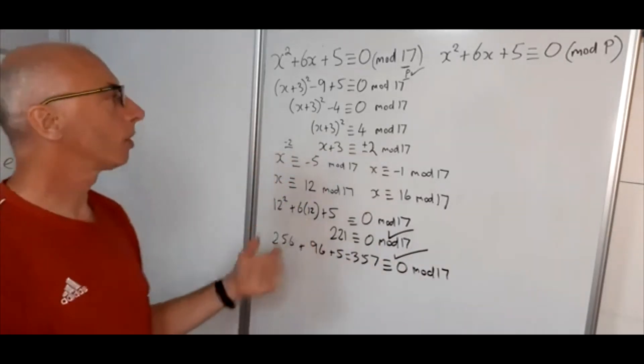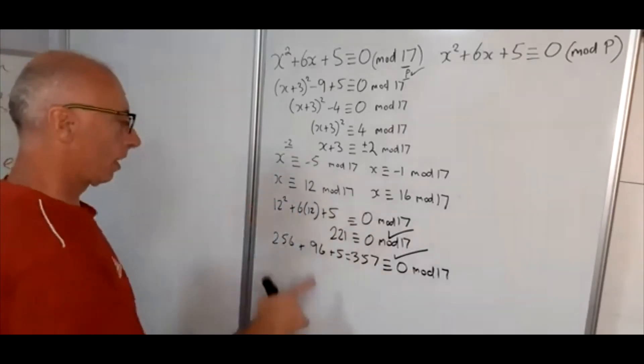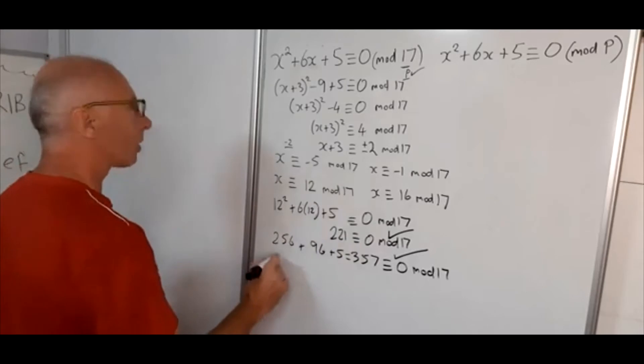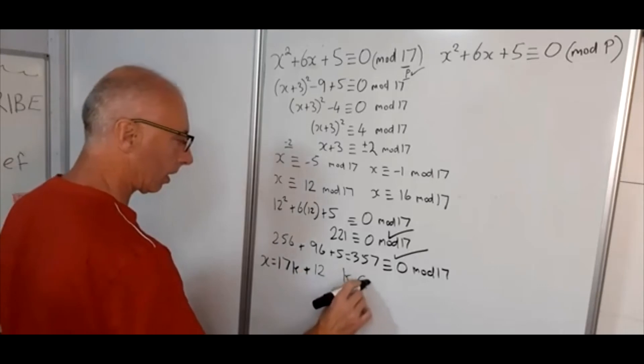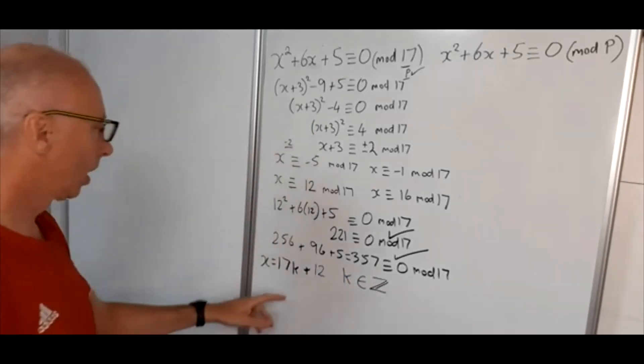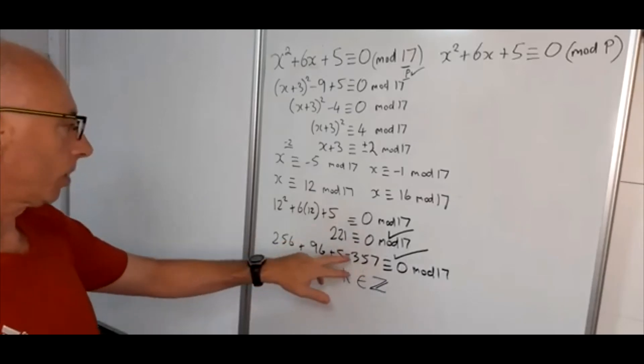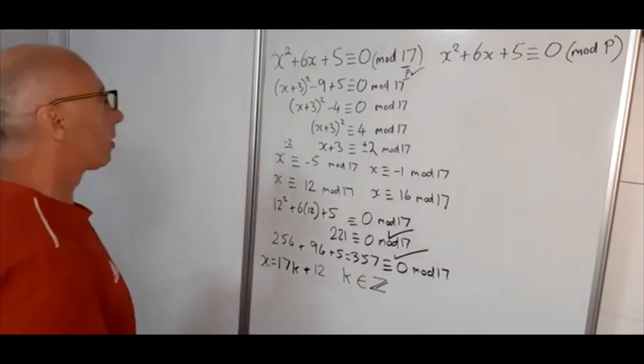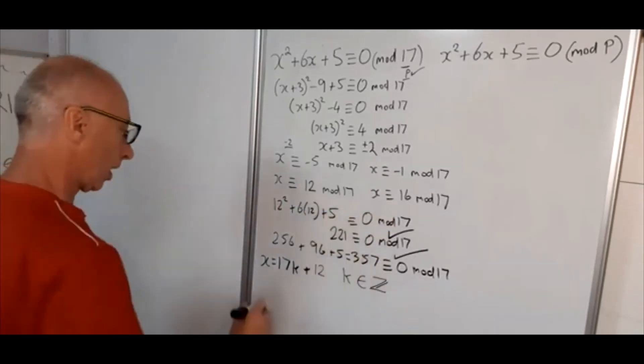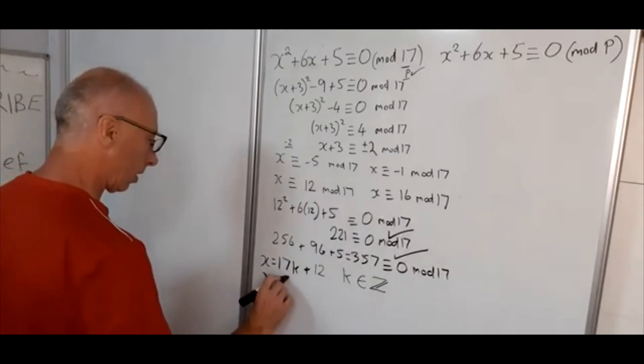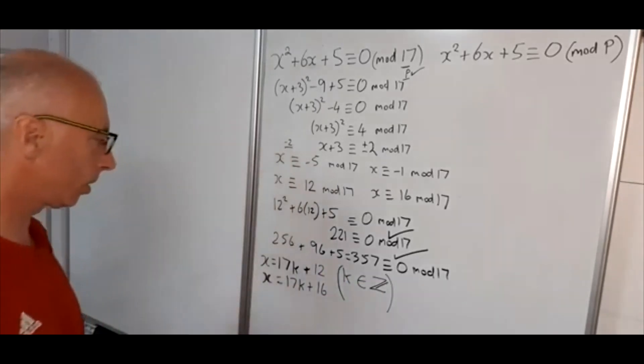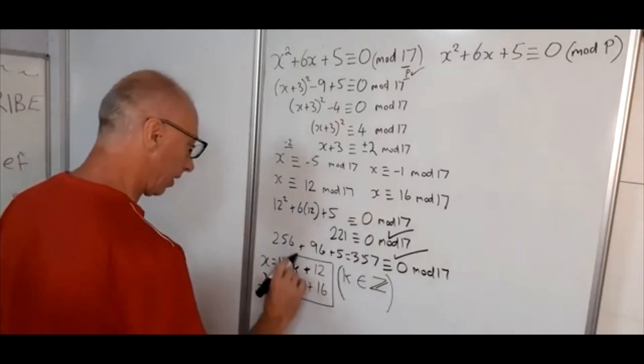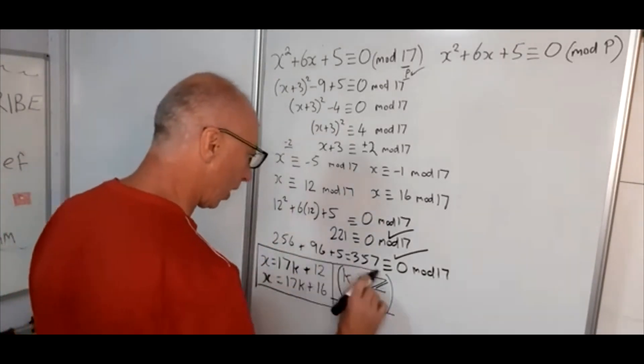But they're not the only solutions. So we have infinite solutions for that. So taking the case of 12, basically what we're saying is the solutions are 17k. Let's just write this down. X equals 17k plus 12 for k is in the integers. And taking the case of 16, we say x equals 17k plus 16 again using this set here where k is in the integers. And that's our two solutions for that function there.